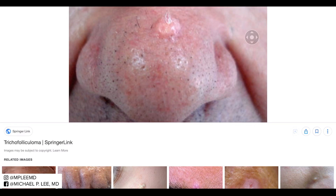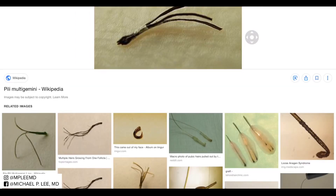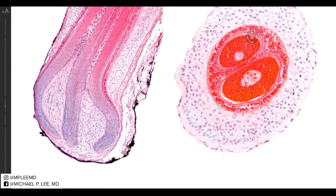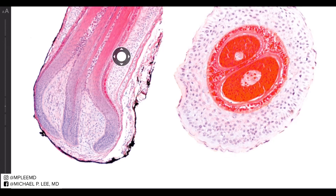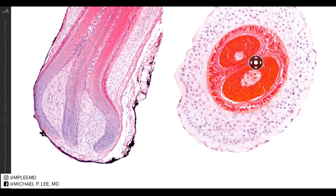One would think about something like Pili multigemini — that's multiple hair shafts coming out of one follicular structure. This is the H&E of Pili multigemini, and you can see multiple hair shafts all contained within one follicular canal: one outer root sheath, but multiple hair shafts coming in and out.